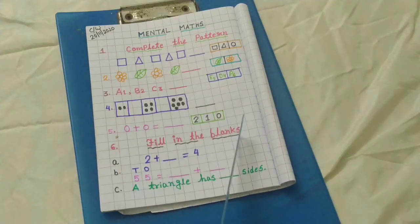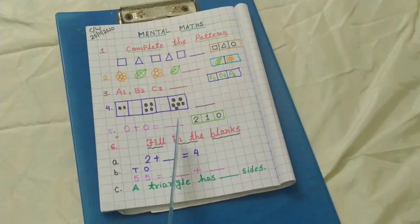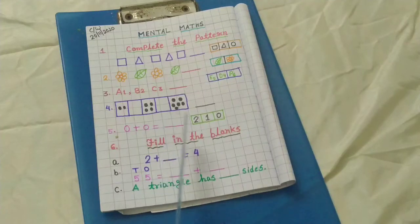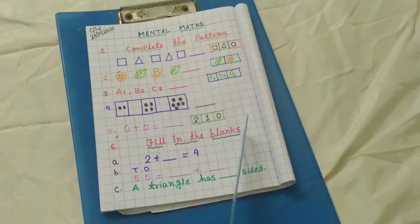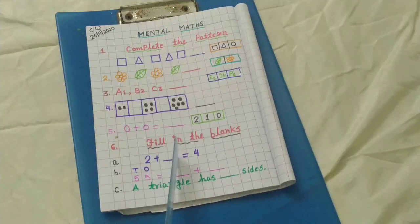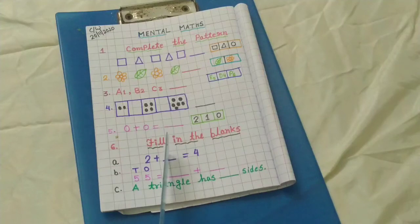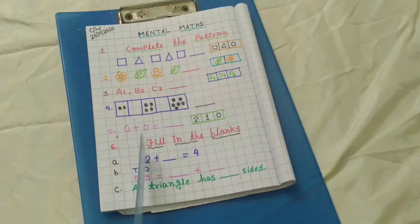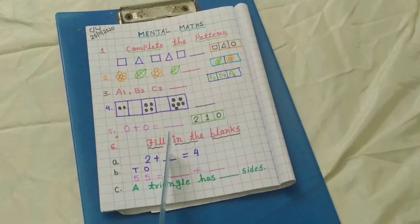Number 6. Fill in the blanks: F-I-L-L fill, I-N in, T-H-E the, B-L-A-N-K-S blanks. Number A: 2 plus dash is equal to 4. So which number will come here? You have to write your answer here.